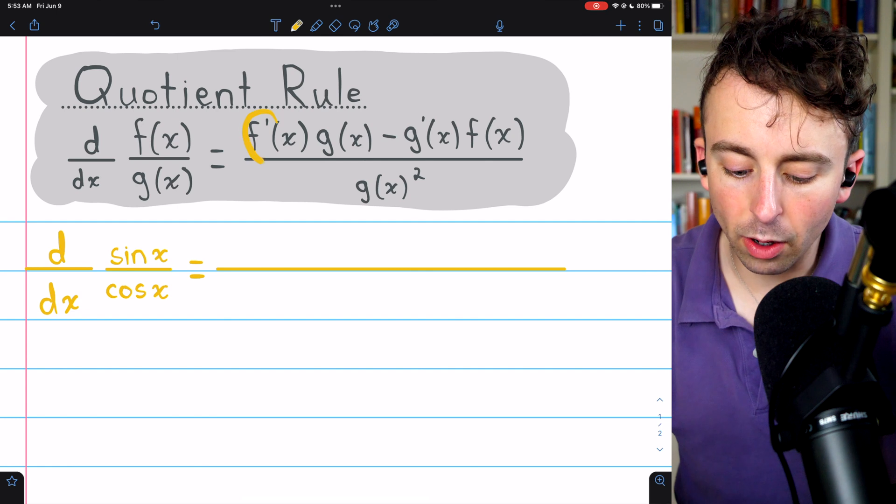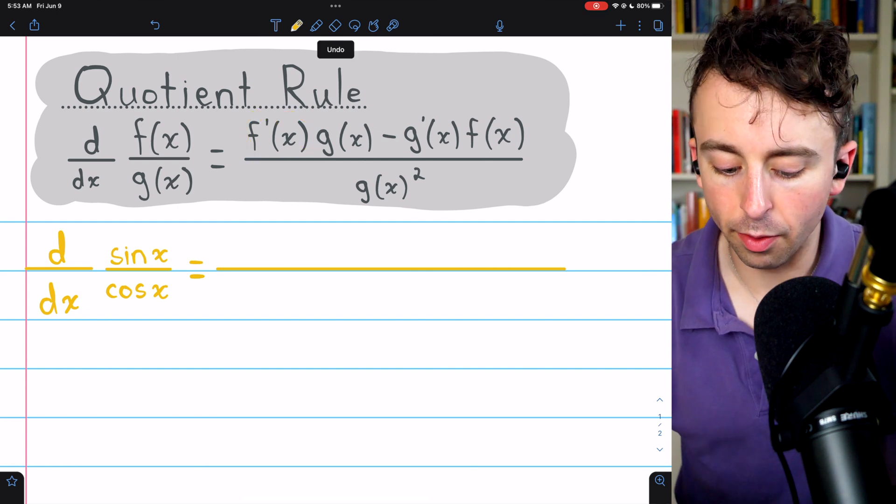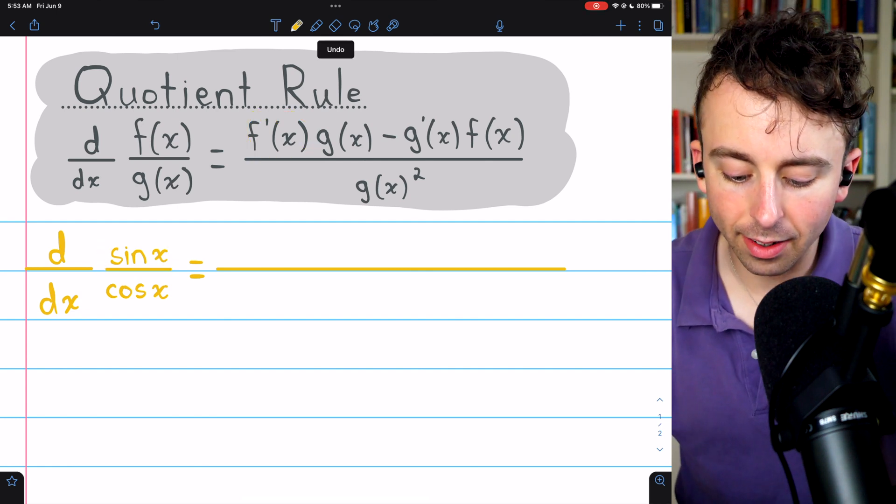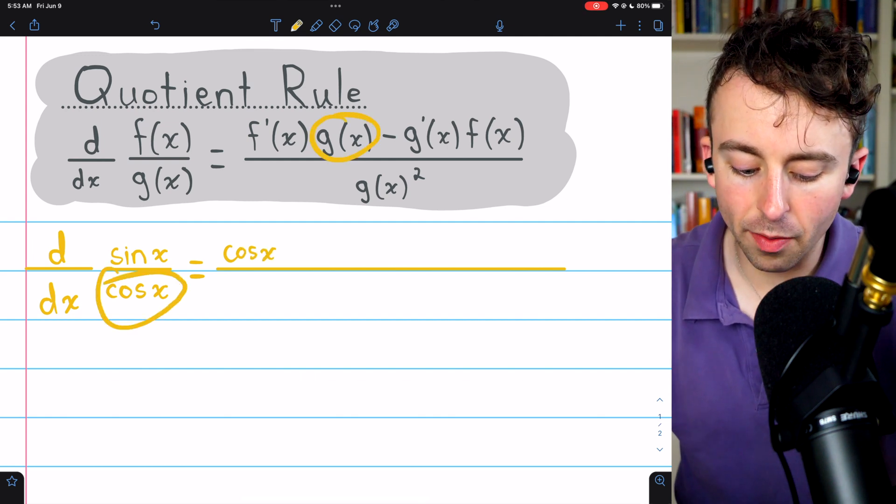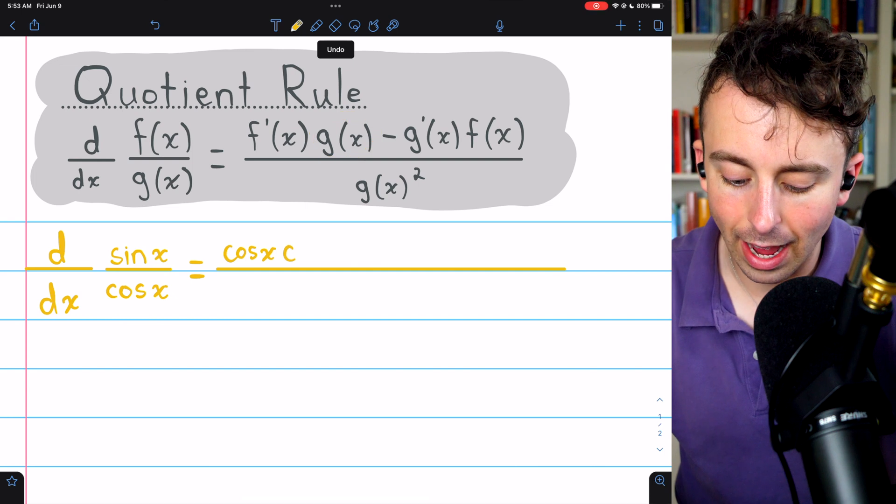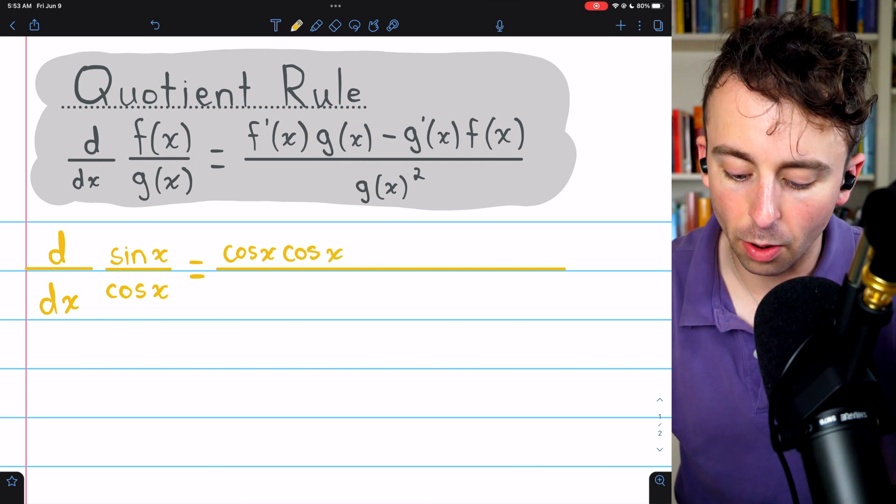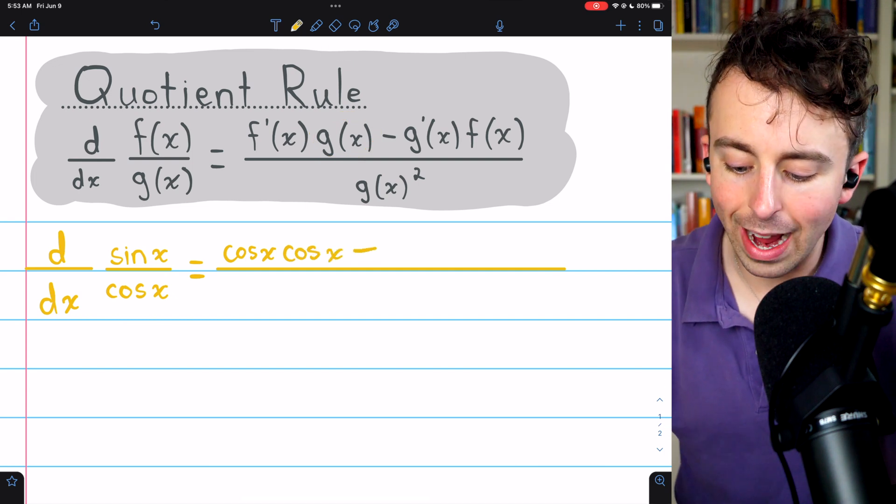In the numerator, we begin with f prime, the derivative of f. f is sine x, so f prime is cosine x. Then we multiply that by g(x), which is cosine x. So we have cosine x times cosine x. Then we subtract g prime.